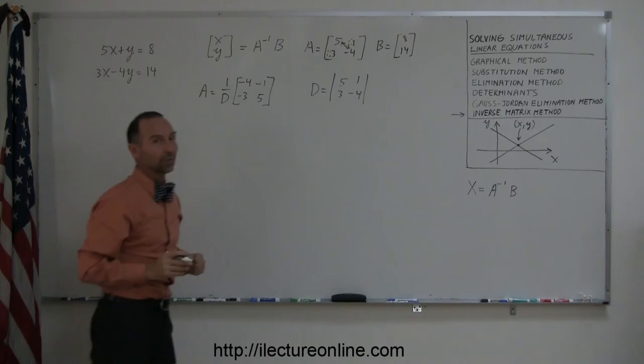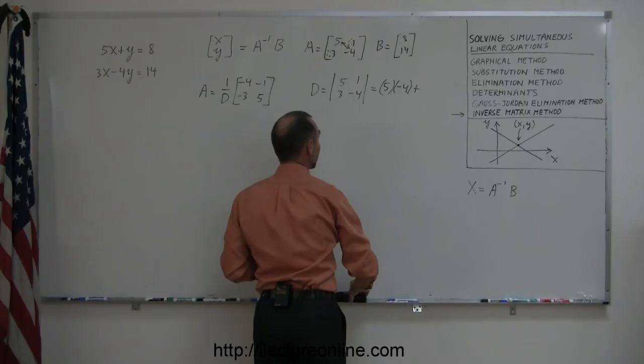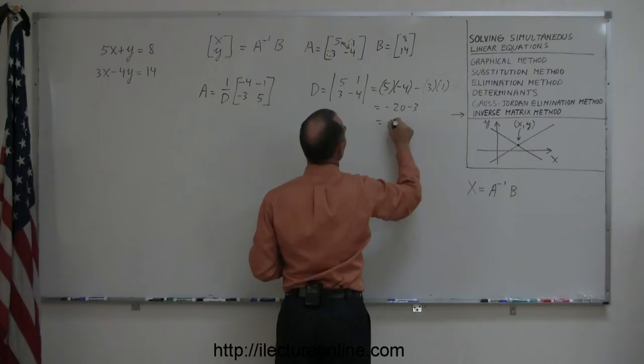And to find the determinant, you multiply those two elements together, which is 5 times negative 4, and subtracting from that the product of those two elements, which is 3 and 1. So it's equal to minus 20 minus 3, which is minus 23.